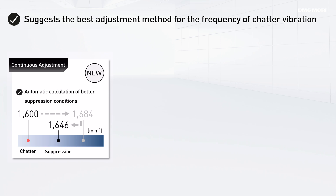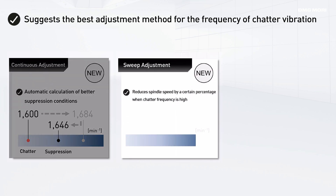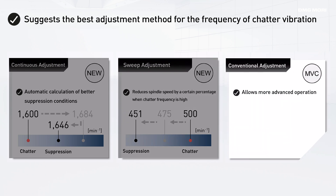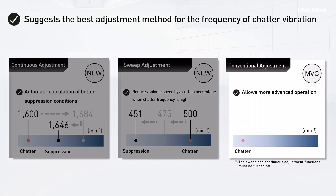Second, the sweep adjustment function. In case the continuous adjustment function would take too much time, the sweep adjustment function is used instead. It lowers the spindle speed by a certain percentage to transition to a stable region. As with the MVC function, operators can press the select button to change the spindle speed while checking the effect on chatter vibration and select the optimal condition.